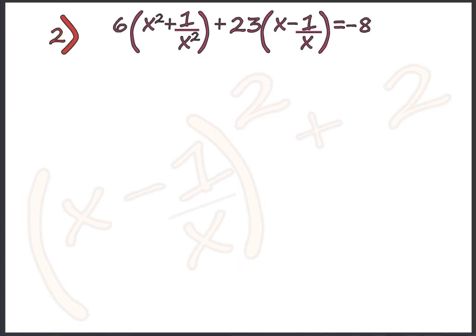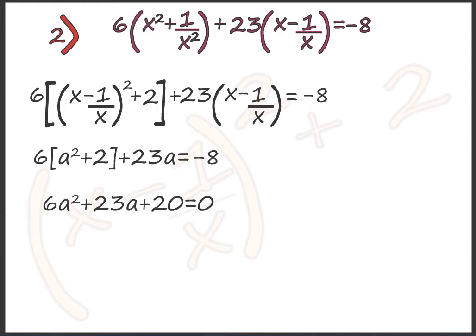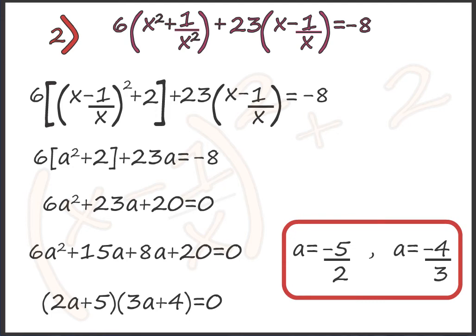Now let's move to another example. This one is similar to the previous, but notice it's x minus 1 by x, not x plus 1 by x, so we use the second identity: x squared plus 1 upon x squared equals x minus 1 upon x, whole squared, plus 2. Substituting a for x minus 1 by x, we get 6 into a squared plus 2, plus 23a equals minus 8, giving 6a squared plus 23a plus 20 equals 0. Factoring: 2a plus 5 into 3a plus 4 equals 0, so a equals minus 5 by 2 or a equals minus 4 by 3.